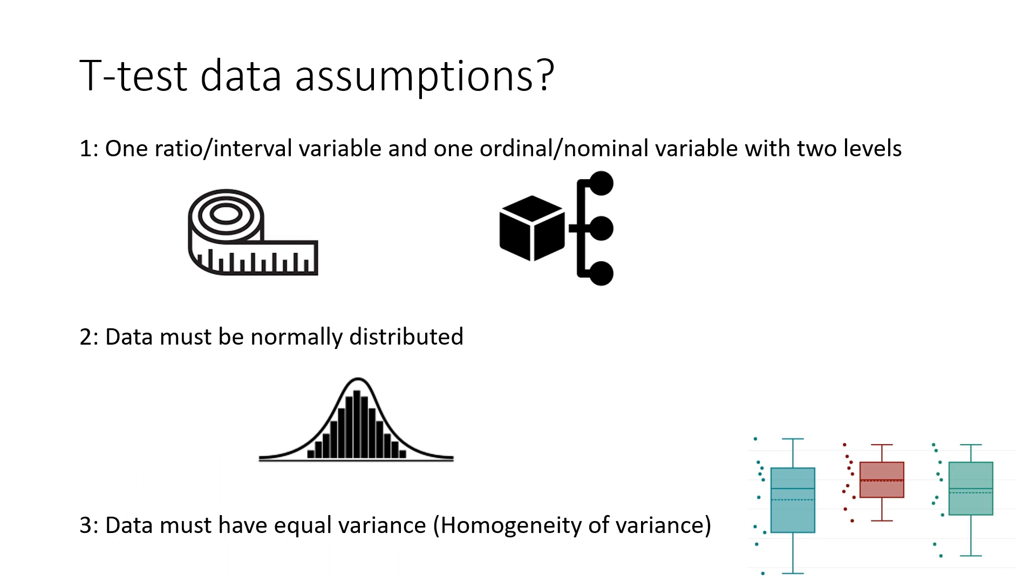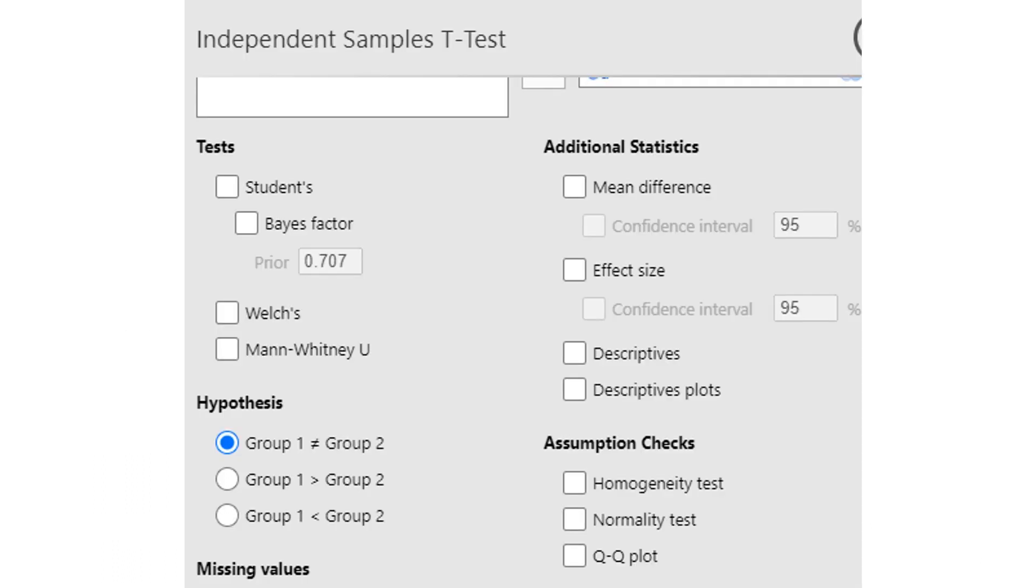At this point in time, you should be able to tell what type of variables your data consists of. However, terms like normally distributed and equal variance might cause a bit of confusion. What do these terms even mean?